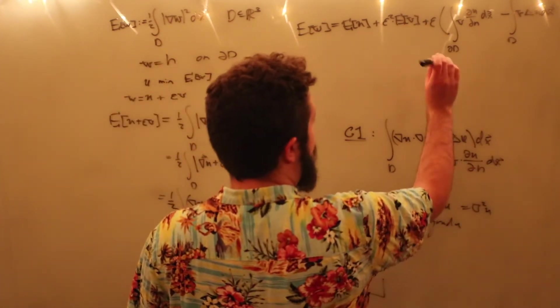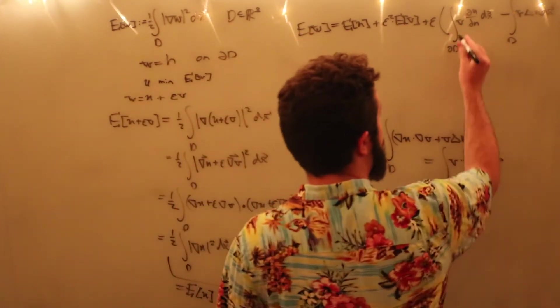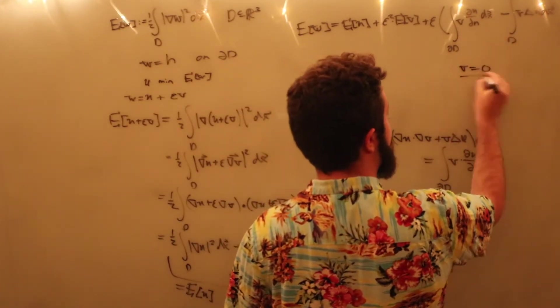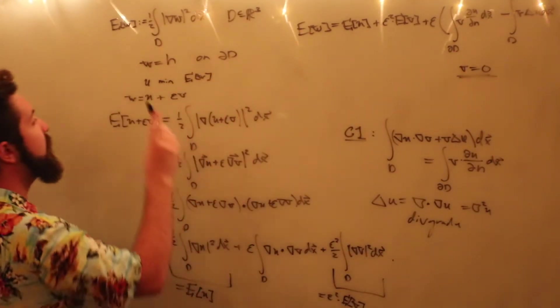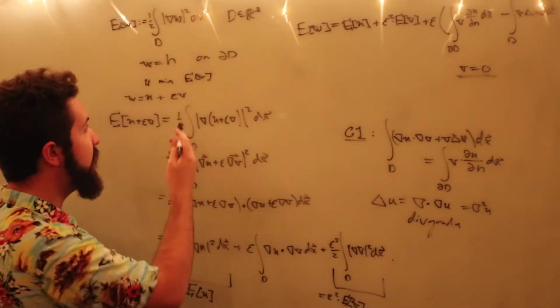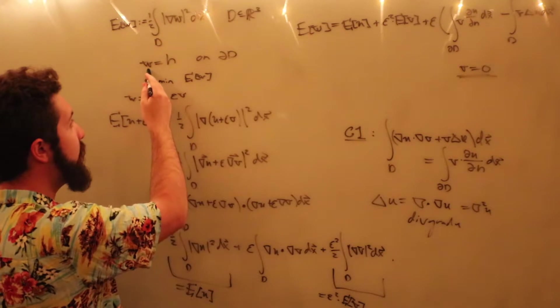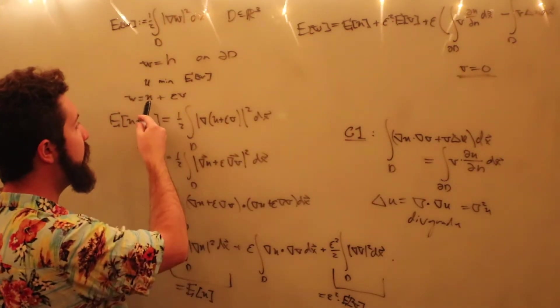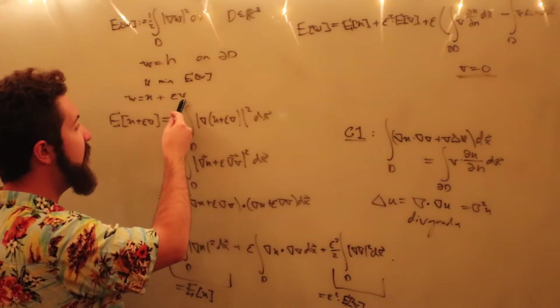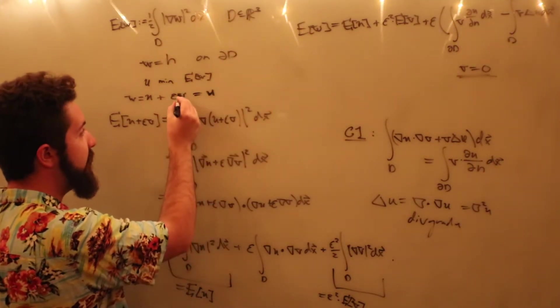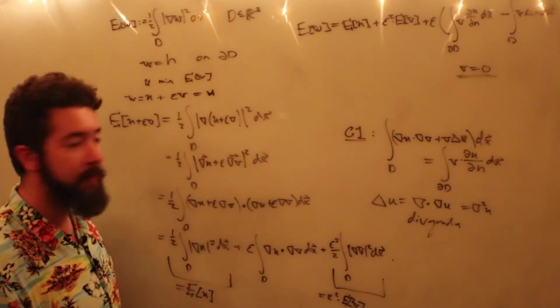Okay, so now we have this, but we know that v on the boundary of d, v is equal to zero. Why is this? Because we want u to be the minimizing function of the integral, which means w has to equal u on the boundary. This can only be true when u plus epsilon v is equal to u, which means that v has to be equal to zero.